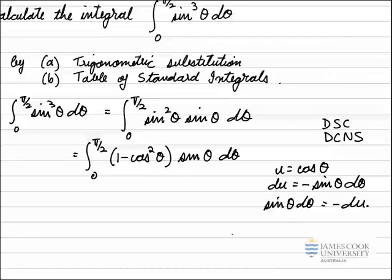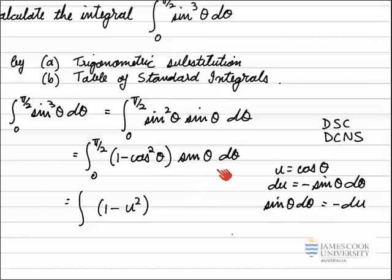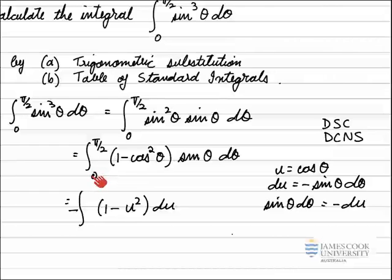Making all those substitutions — remembering to transform the integrand as well as the differential — using all the information at the side: the function I'm integrating is now one minus u squared. The sine theta d theta part I replace with negative du, so I put du on the end and the negative one in front of the integral sign. Note that I didn't put in the limits here, because these are theta values. Whenever I make a substitution like this, I have to change the limits as well, the same way I change the integrand and the differential.